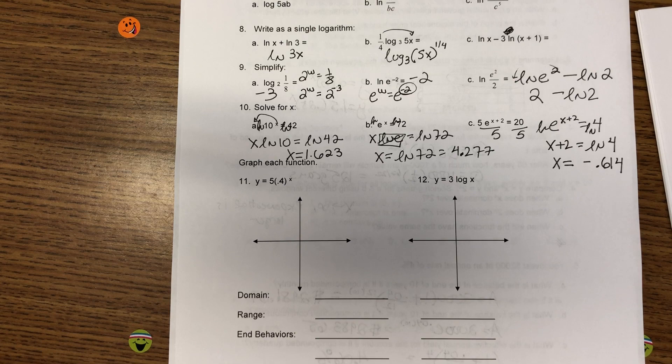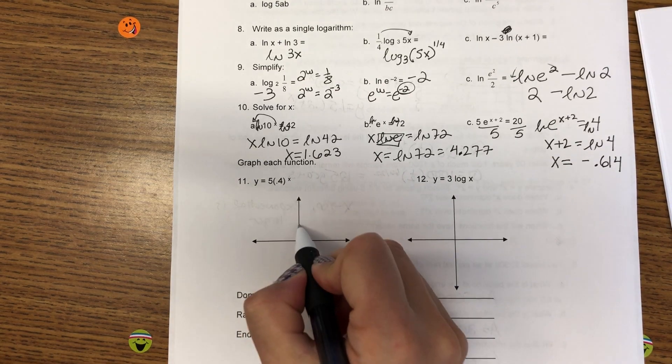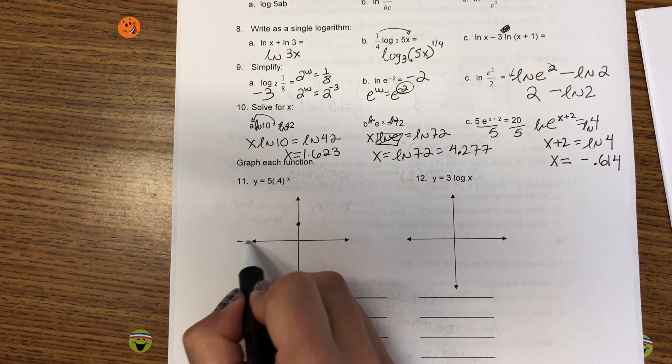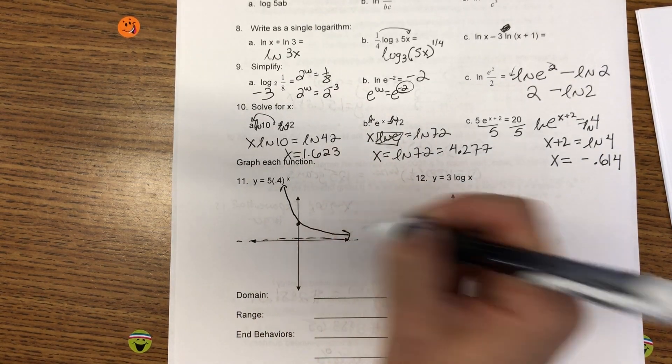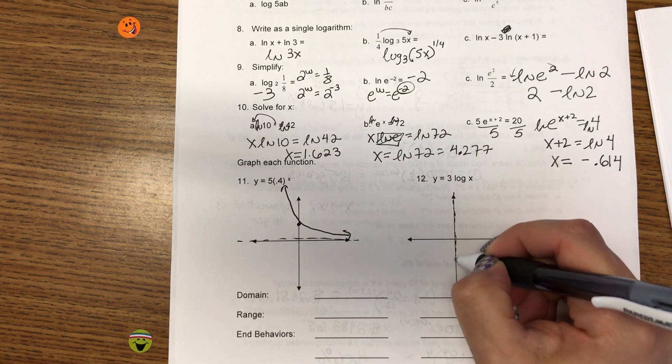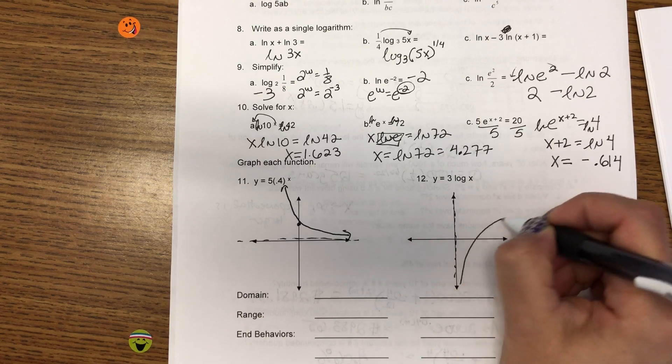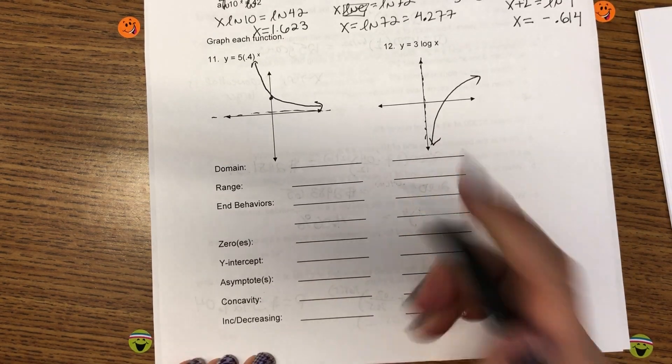Alright. Last but not least, graph. Then, do all the properties. This is an exponential decay with an initial value at 5. My horizontal asymptote. You could use your calculator if you wanted. The logarithm has a vertical asymptote. Looks like this.